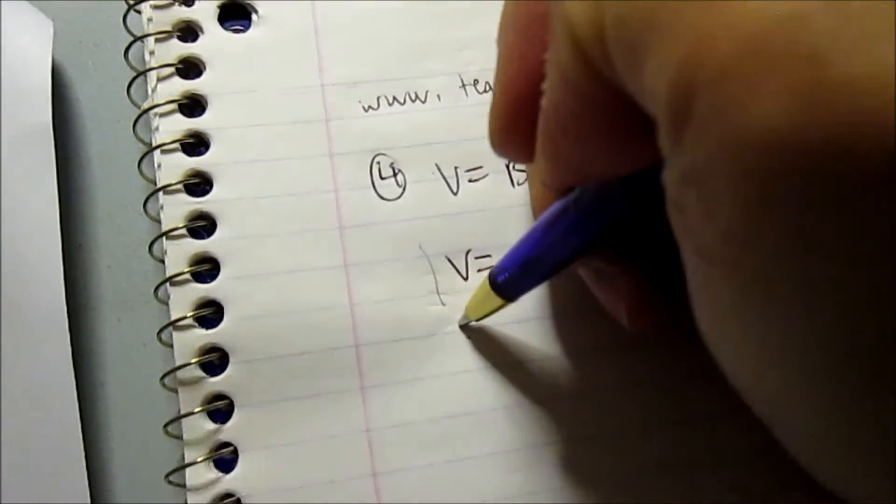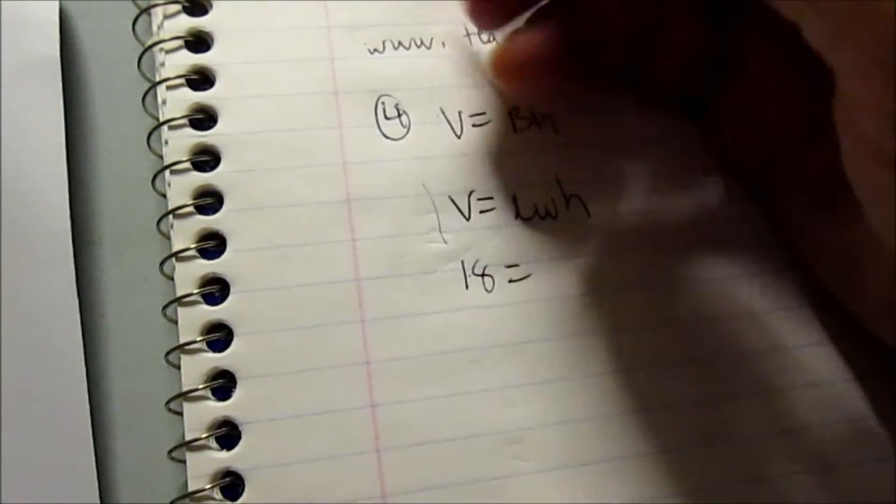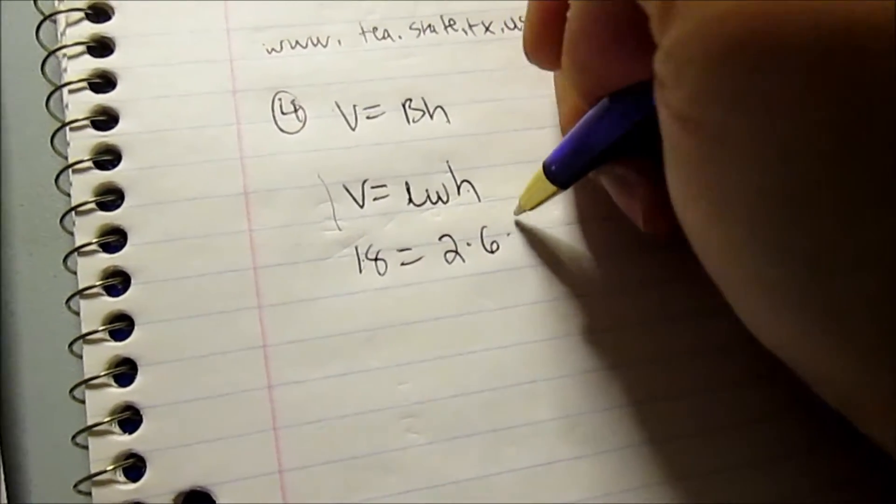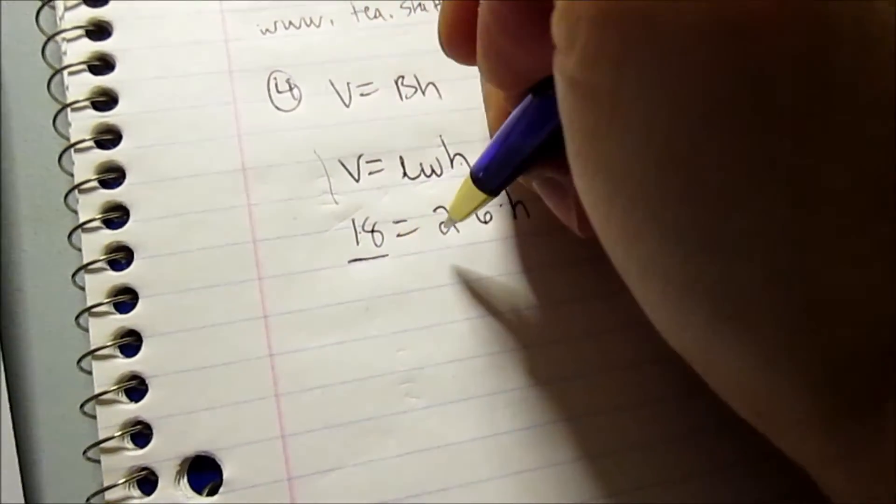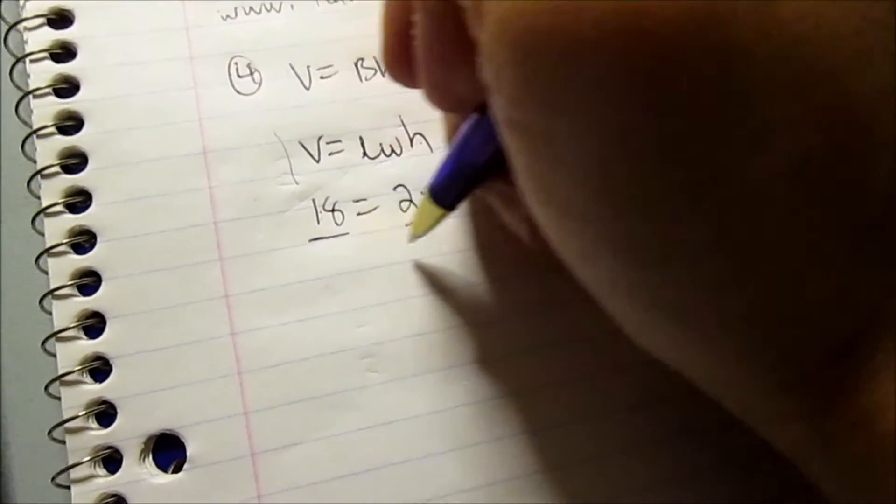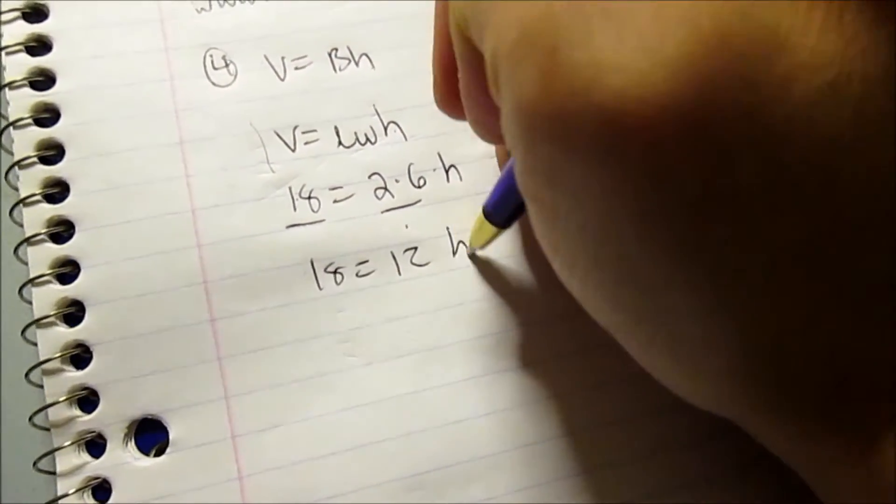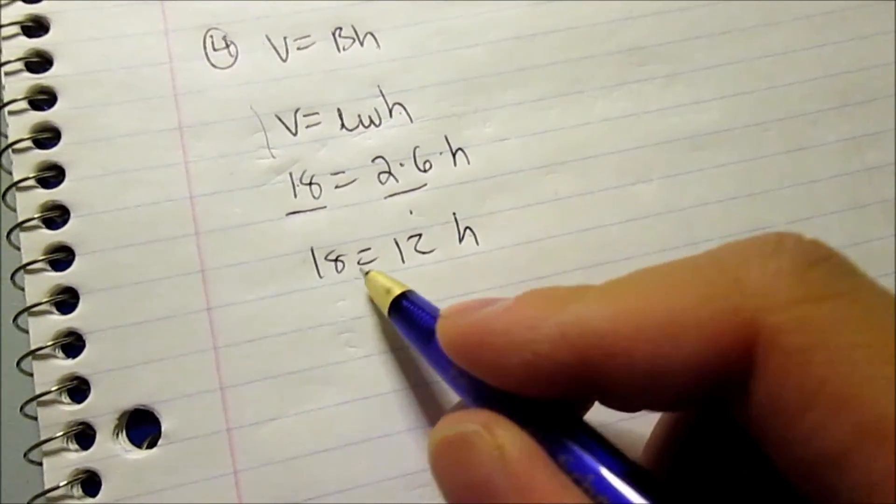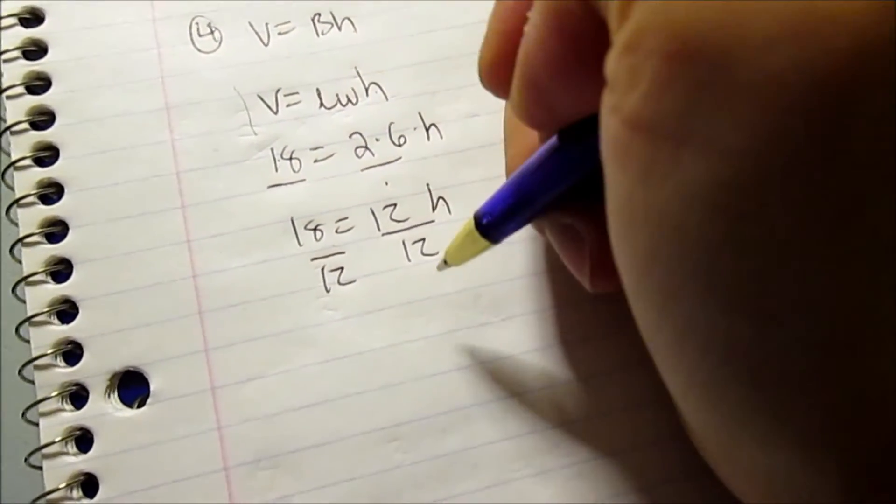From the problem, the volume was 18. I put 18 underneath V. Length and width were 6 and 2 respectively, so that's 2 times 6. And I don't know the height, so I put H as it is. Then I go ahead and multiply 2 times 6, which is 12. And I still need to find H. So 12 times H will give me 18. To find what H is, I have to divide 18 by 12.